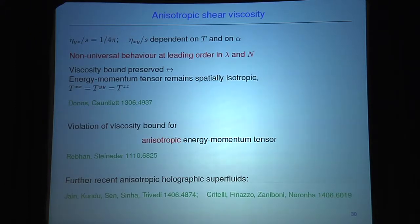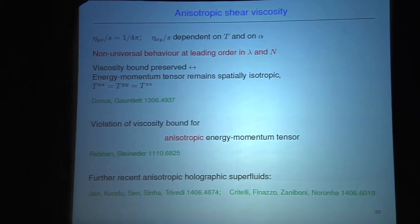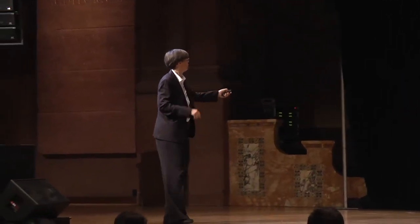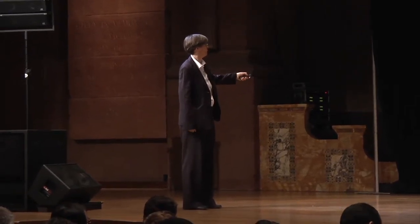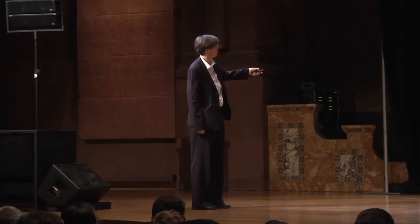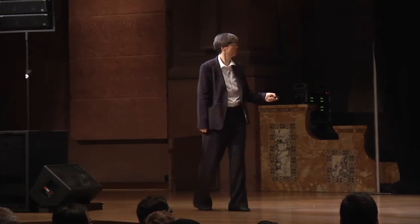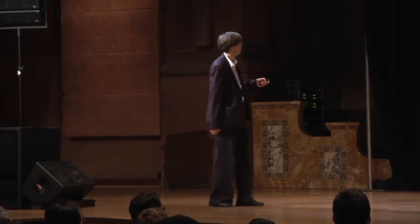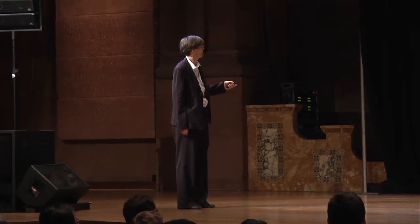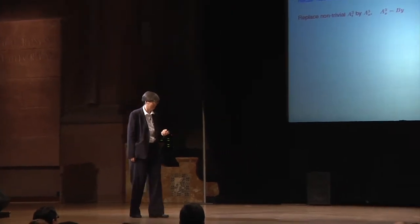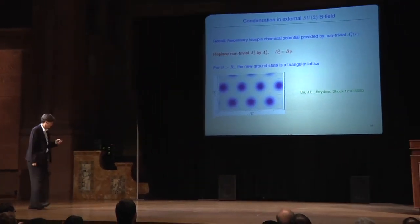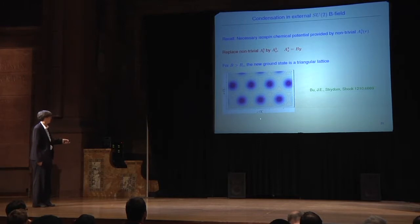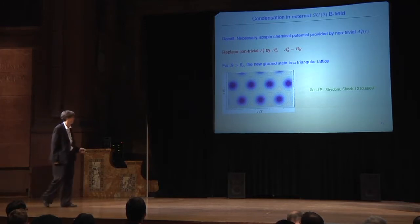Let me point out that the second reference also looks at the influence of magnetic fields, which brings me to my next step. So far we looked at a condensate in the background of an isospin density, but we can very simply switch to an SU(2) magnetic field. Recall that the necessary isospin chemical potential is provided by a non-trivial time component of the gauge field in the 3-direction of isospin space. Now we can replace this background field time component by a spatial component of appropriate form, and something very interesting happens: we still see condensation, and if there is a magnetic field bigger than some critical value then the new ground state is a triangular lattice.